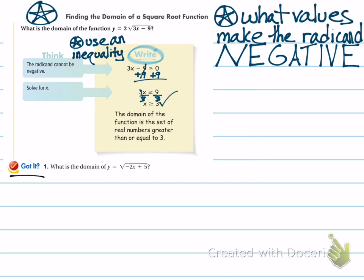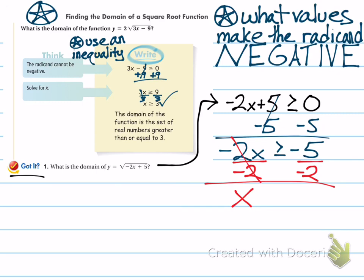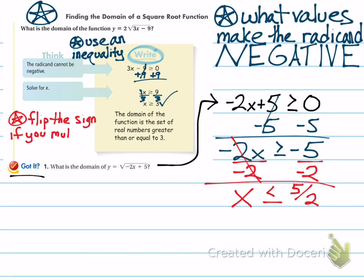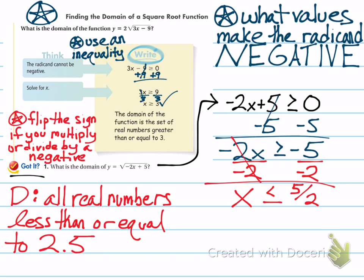Let's look at the next example: the square root of negative 2x plus 5. You take negative 2x plus 5 and set it greater than or equal to 0. Then subtract 5 from both sides to get negative 2x is greater than or equal to negative 5. Then divide by negative 2. The negatives cancel, but remember — we are dividing by a negative number, so the sign has to flip. Whenever you multiply or divide by a negative number, the sign flips. The domain of this function is x is less than or equal to 2.5, which is 5 over 2 in decimal form.